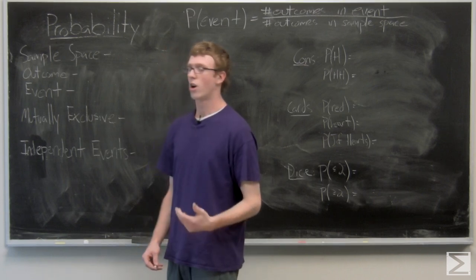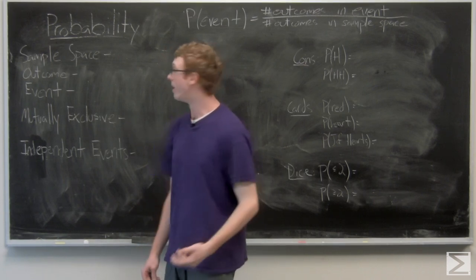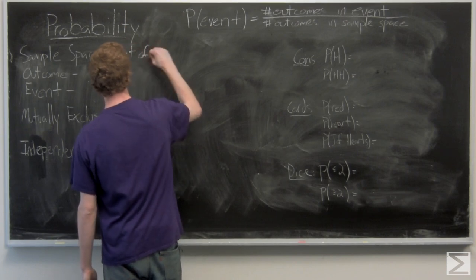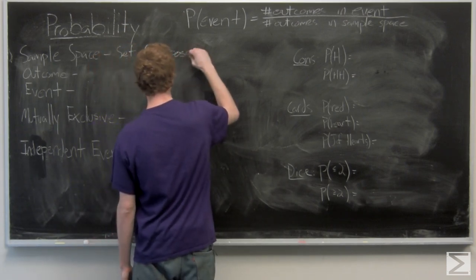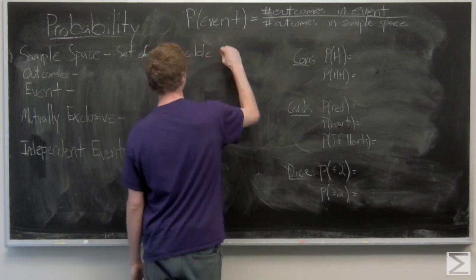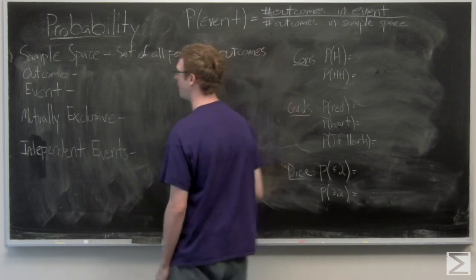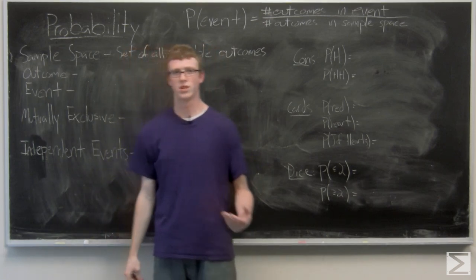So sample space is the set of all possible outcomes of an experiment. And an outcome is the result of one single trial.